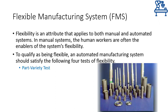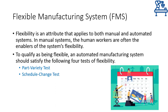The first test is the part variety test, which is what we have discussed for FMS — that it is capable of producing soft variety of parts. The second test is called the schedule change test, which checks if the system can readily accept changes in production schedule, that is changes in part mix and/or production quantities.